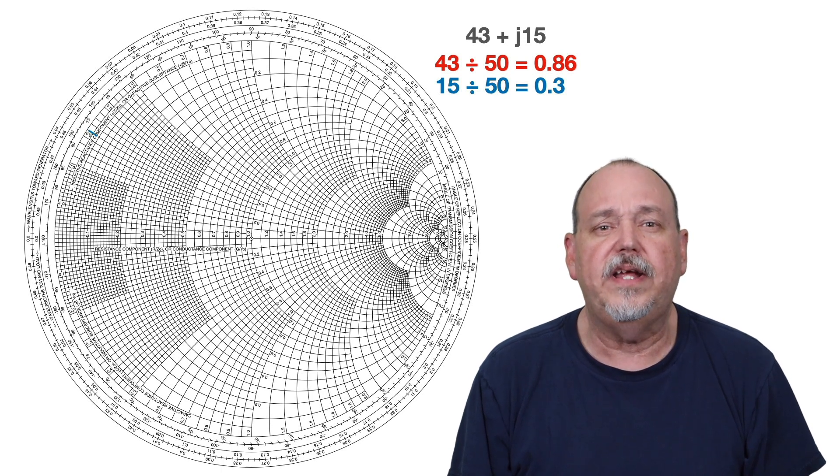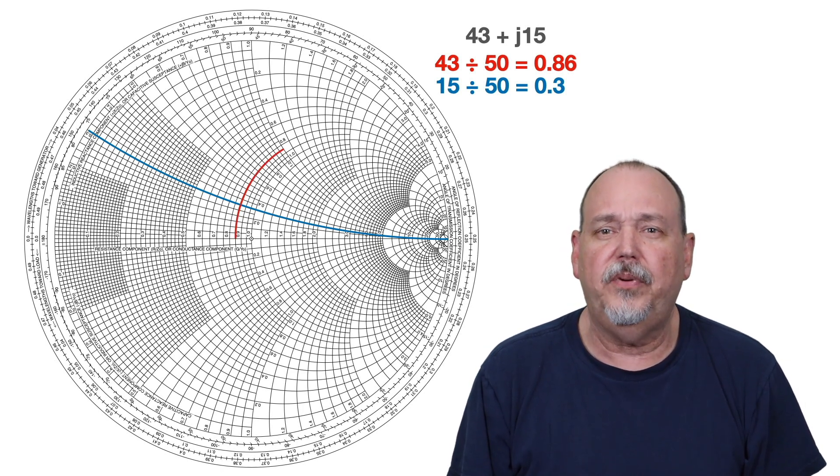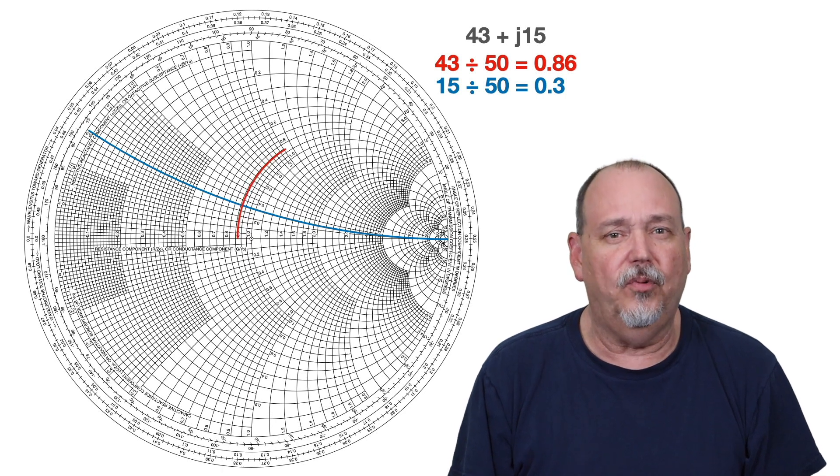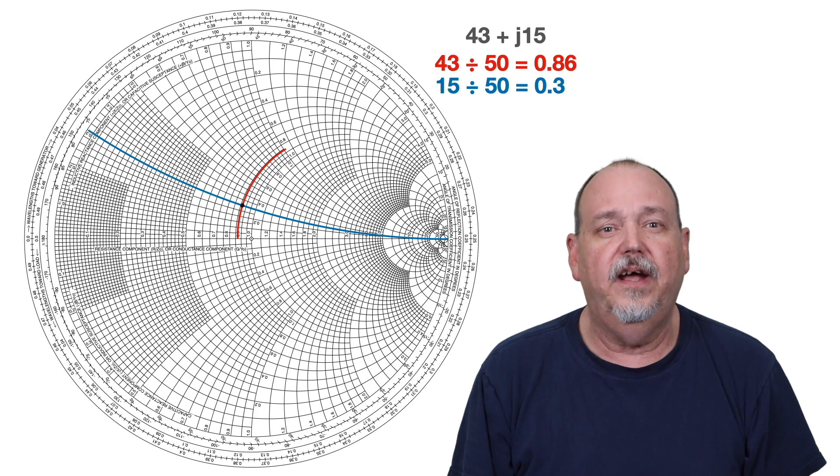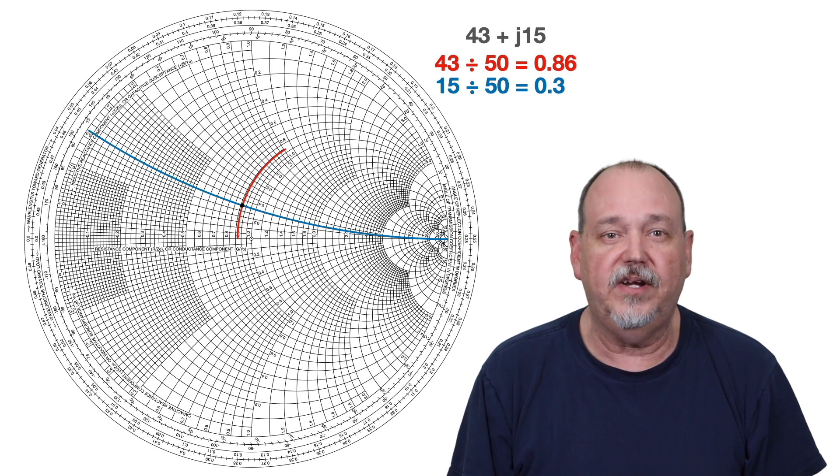First, let's find the 0.3 reactance arc, and then the 0.85 resistance circle. And we'll go just a little bit past this circle to get to 0.86. When we find the intersection between the 0.3 arc and the 0.86 circle, we have our point on the chart, which shows us 15 ohms of inductive reactance.